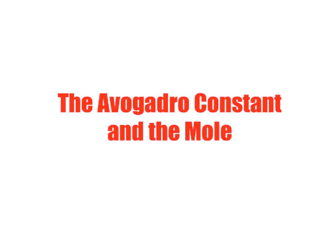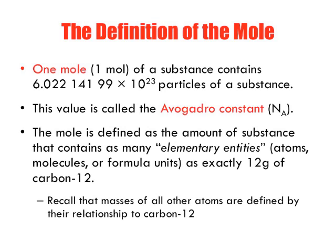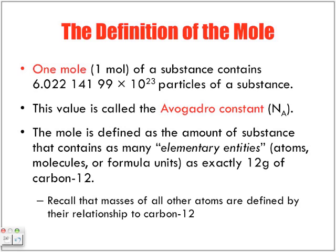Avogadro constant and the mole. The definition of a mole: one mole (symbol: mol) of a substance contains 6.022141199 × 10²³ particles. The only value we're going to worry about when doing calculations is 6.02 × 10²³.